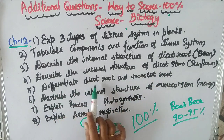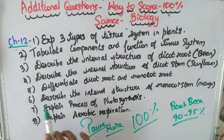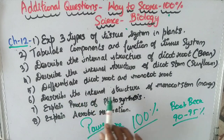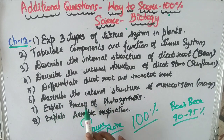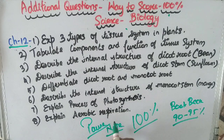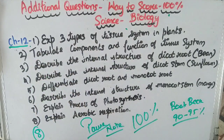Question 5: Differentiate dicot root and monocot root. Question 6: Describe the internal structure of monocot stem mango. Question 7: Explain the process of photosynthesis. Question 8: Explain aerobic respiration. That is a total of 8 additional questions and long answers.